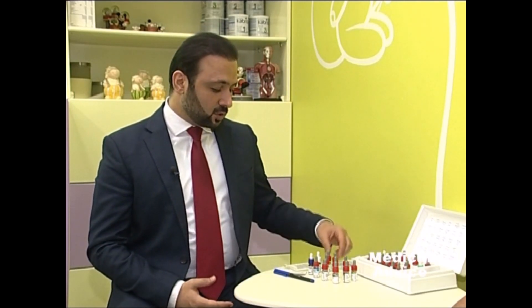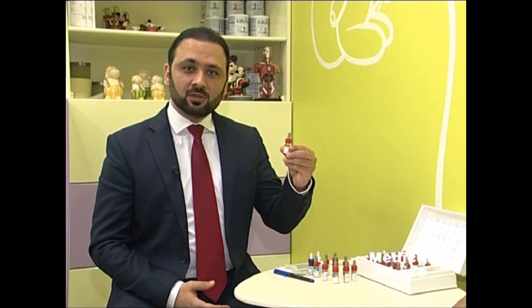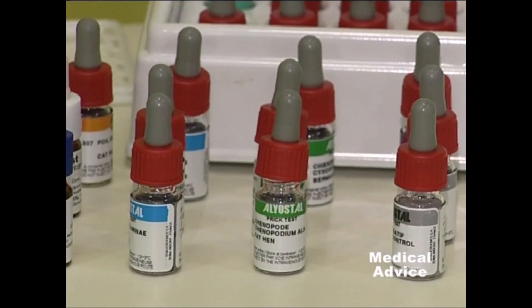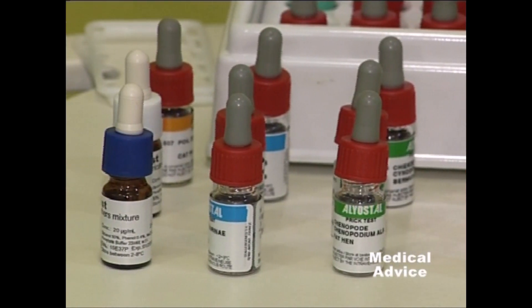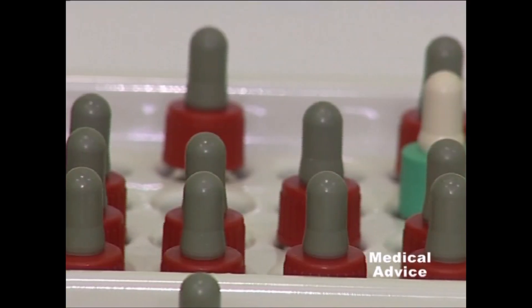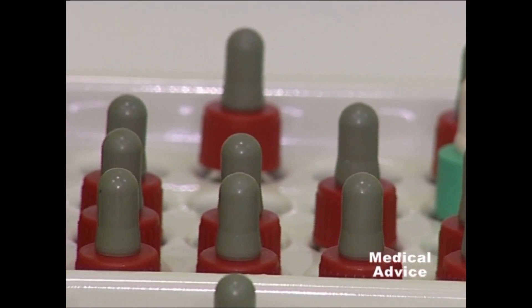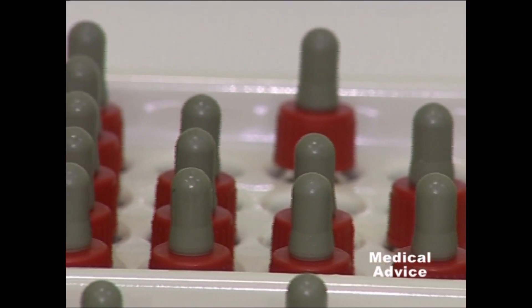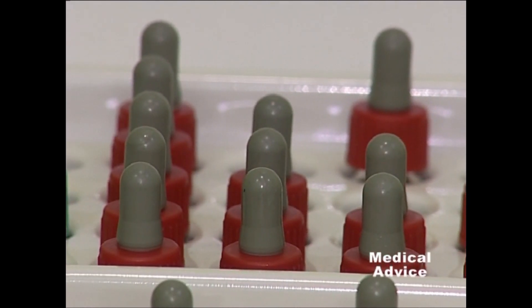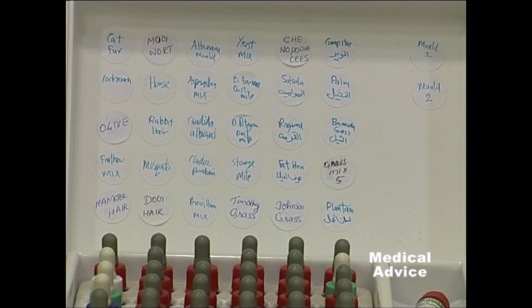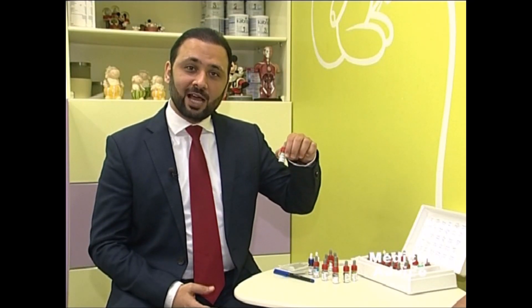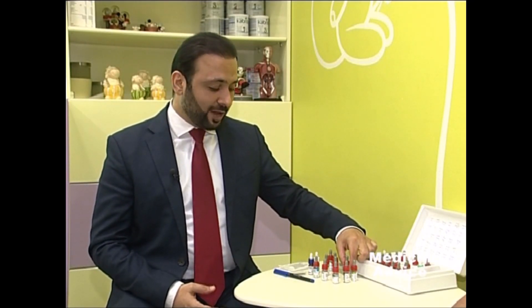The test involves using reagents. Each reagent contains a certain substance — this one has cat dander, another has feather to test for feather allergy, and another has a different kind of pollen called chinopod pollen, as well as date pollen and other pollens. We have more than about 30 materials to be tested on the arm.